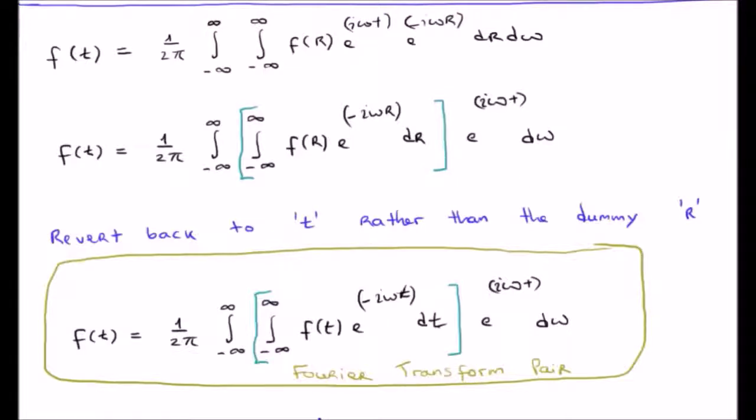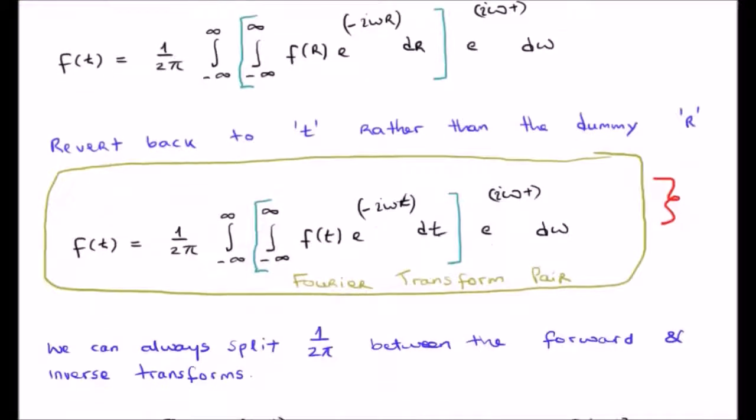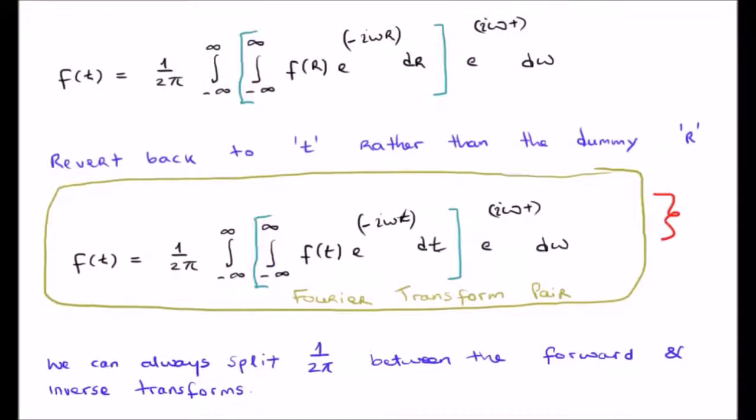Finally, let's revert back to the variable t rather than the dummy variable R. What we get is the Fourier transform and the inverse Fourier transform as a Fourier transform pair.